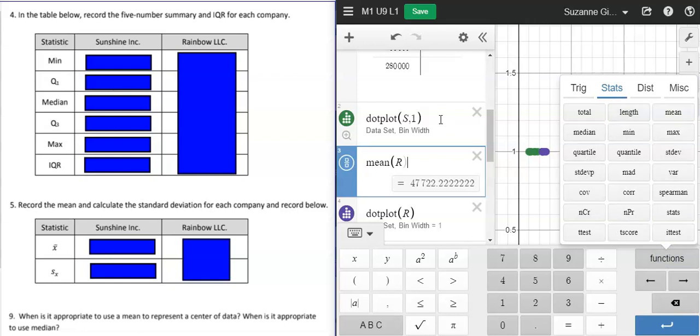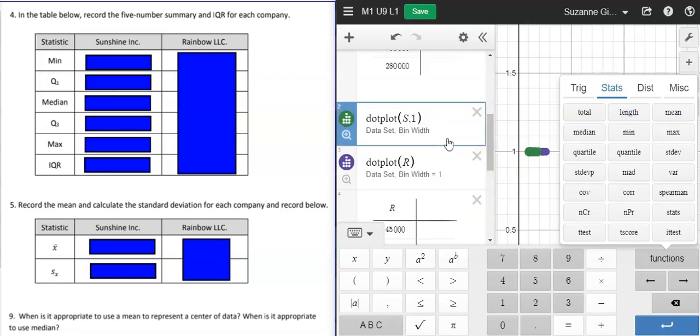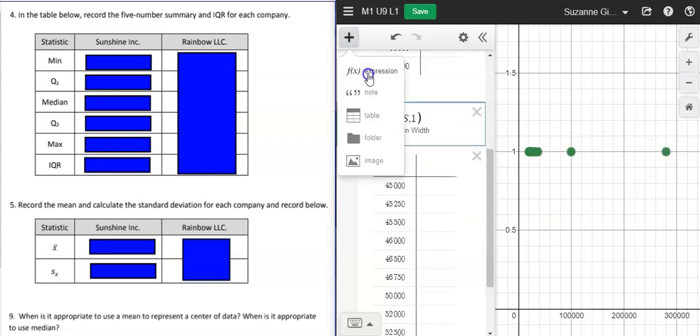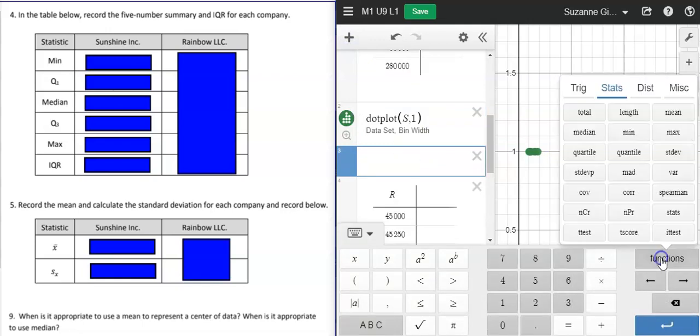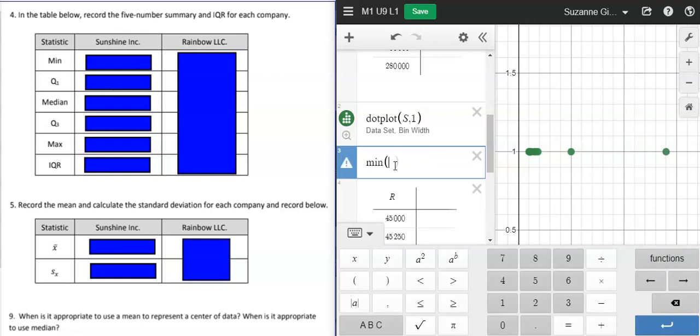We'll start with Sunshine and I'll go ahead and calculate a lot of these to get rid of some of this information. So expression, and if I want the minimum, I could go here to functions and under stats and I could push min and then I just put S because I want to do that for Sunshine. So that minimum for Sunshine is 20,000.